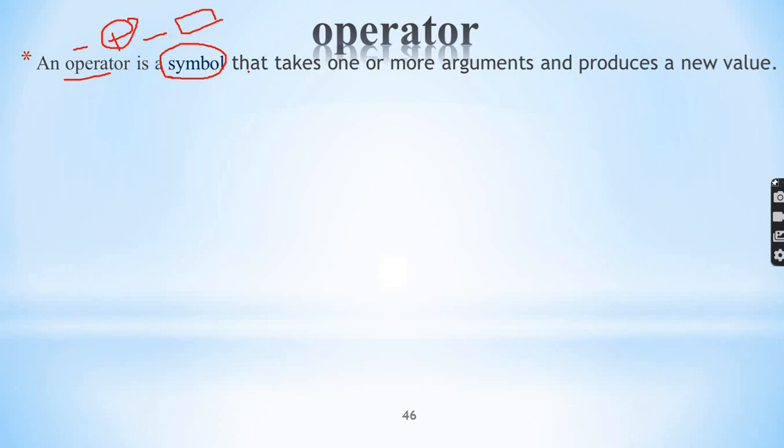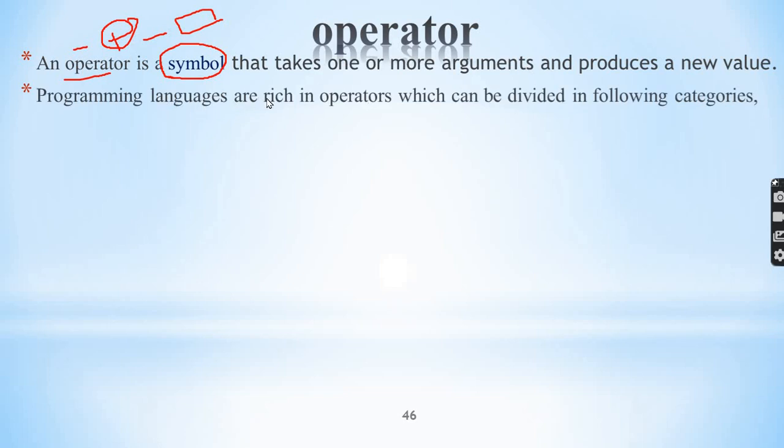So, operators are symbols that take one or more arguments and they will produce a new value. In programming languages, there are a number of operators.